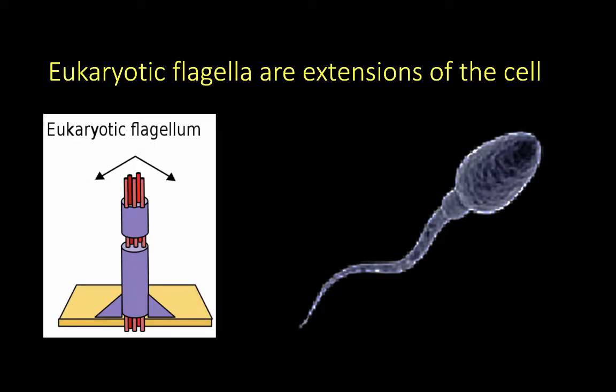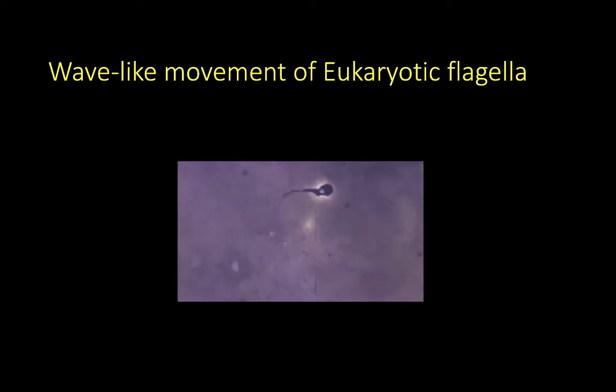Eukaryotic flagella are extensions of the cell. The cell membrane extrudes outwards and long bundles of thin filaments immersed in cytoplasm run lengthwise in the flagella. The filament bundles slide along each other, resulting in a wave-like movement of the flagella.